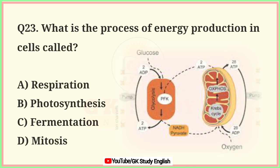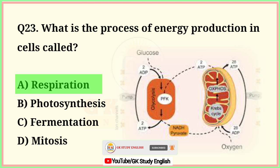Question number 23. What is the process of energy production in cells called? A. Respiration. B. Photosynthesis. C. Fermentation. D. Mitosis. Correct answer is option A. Respiration.